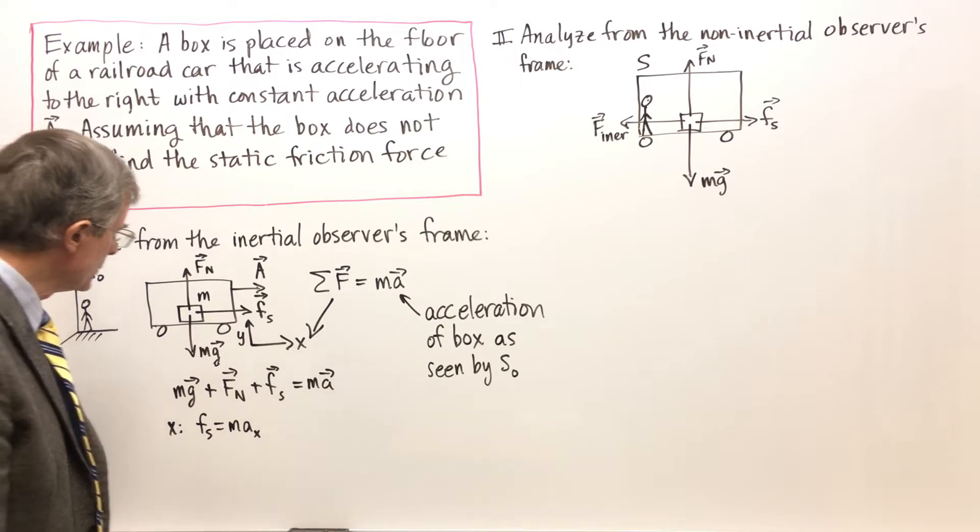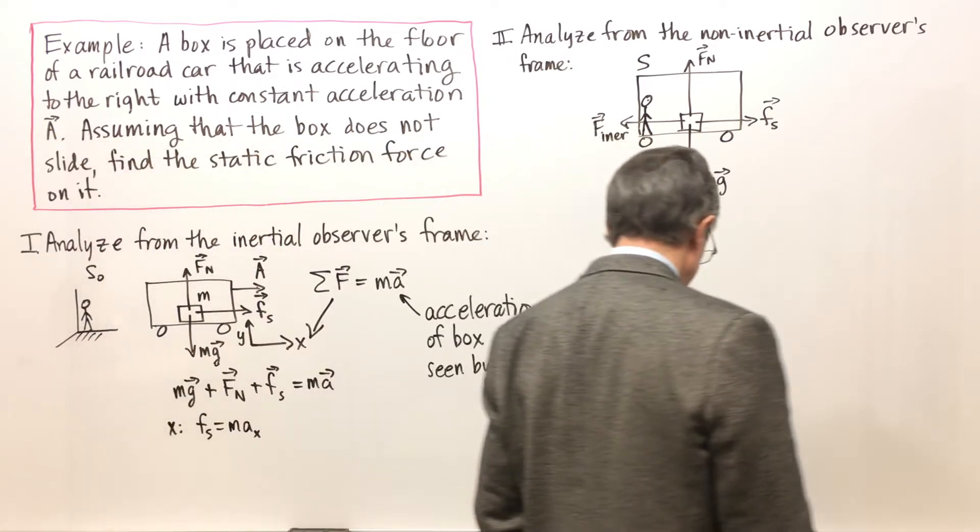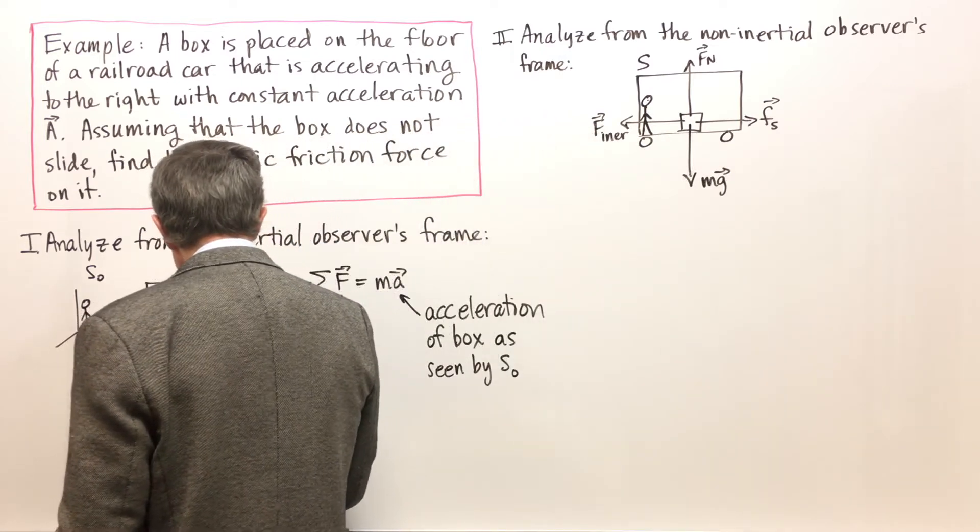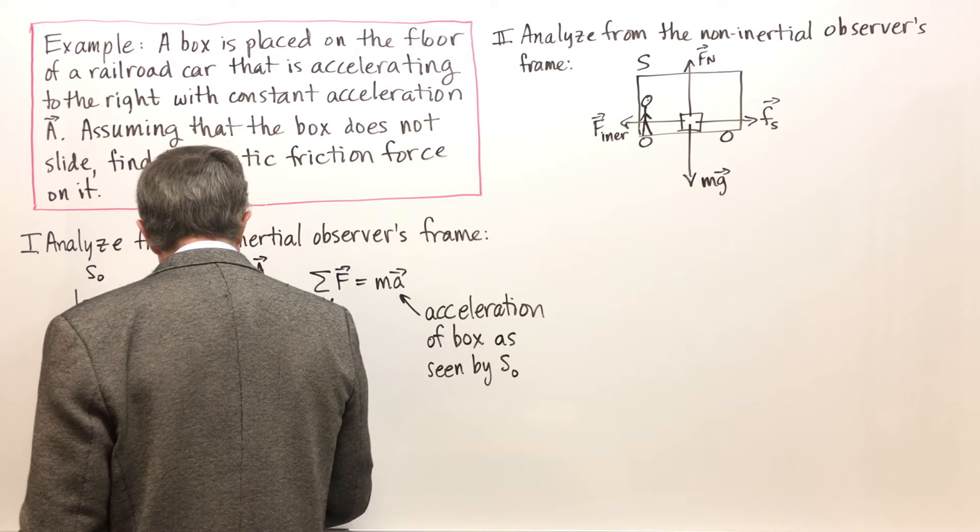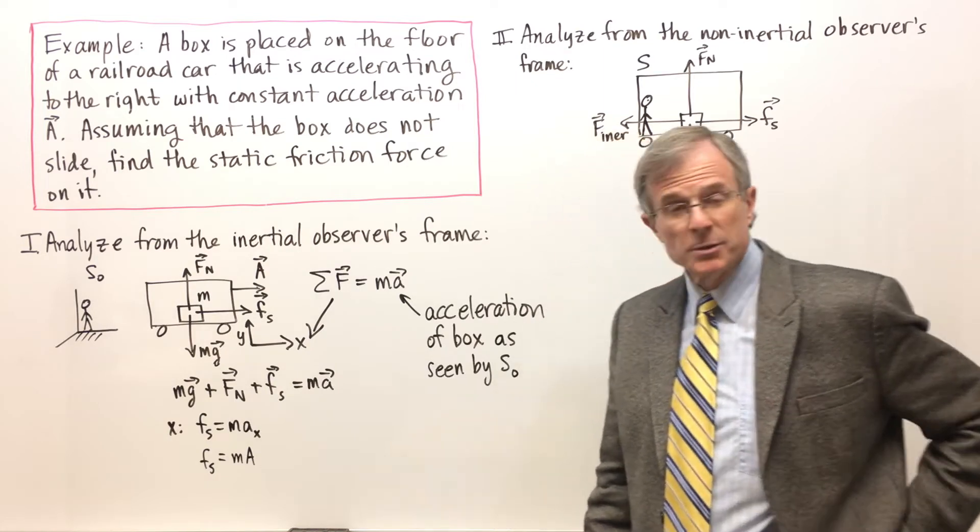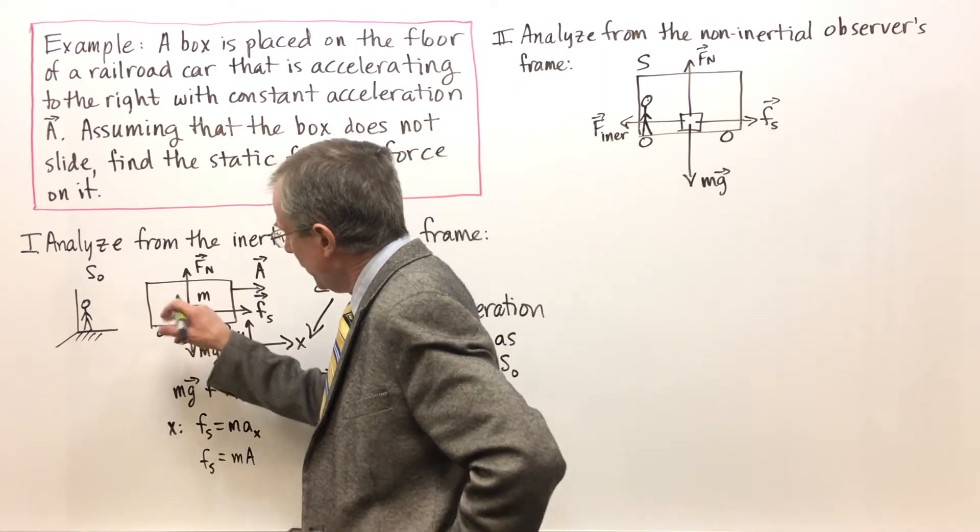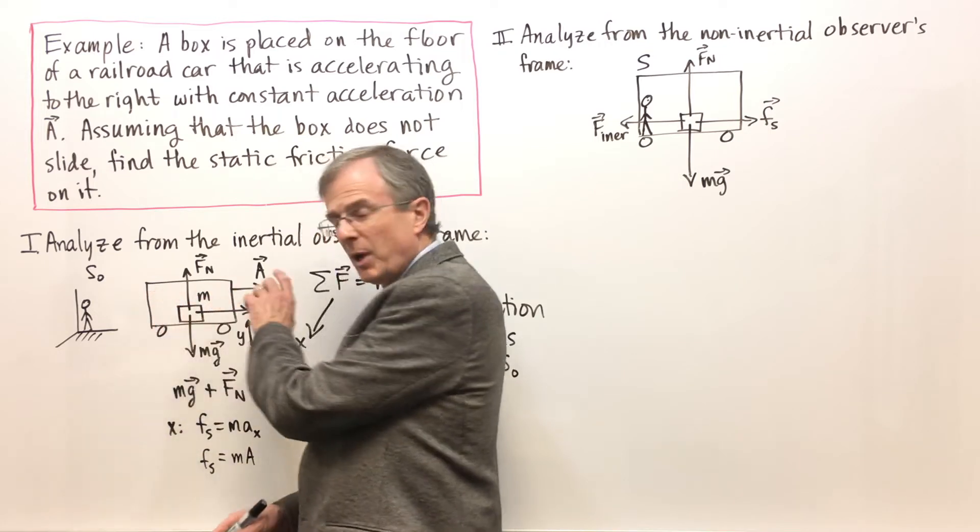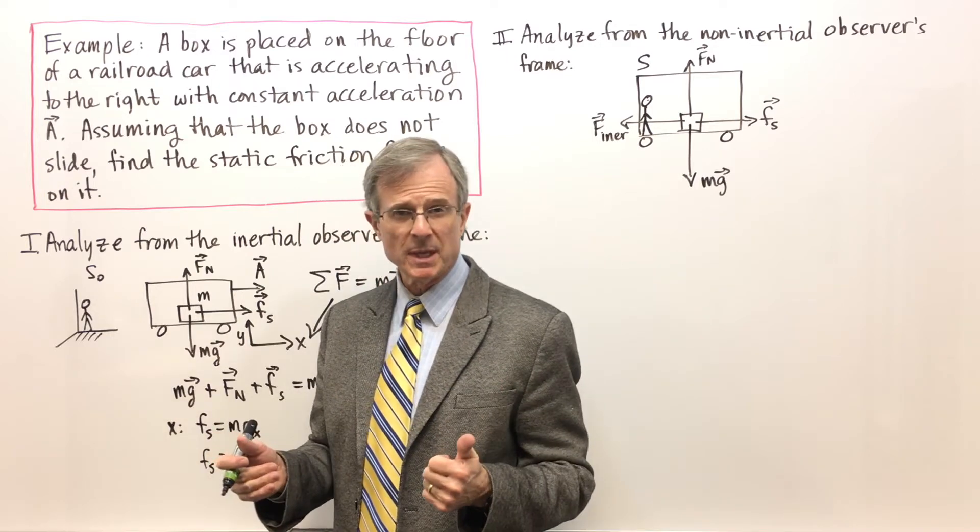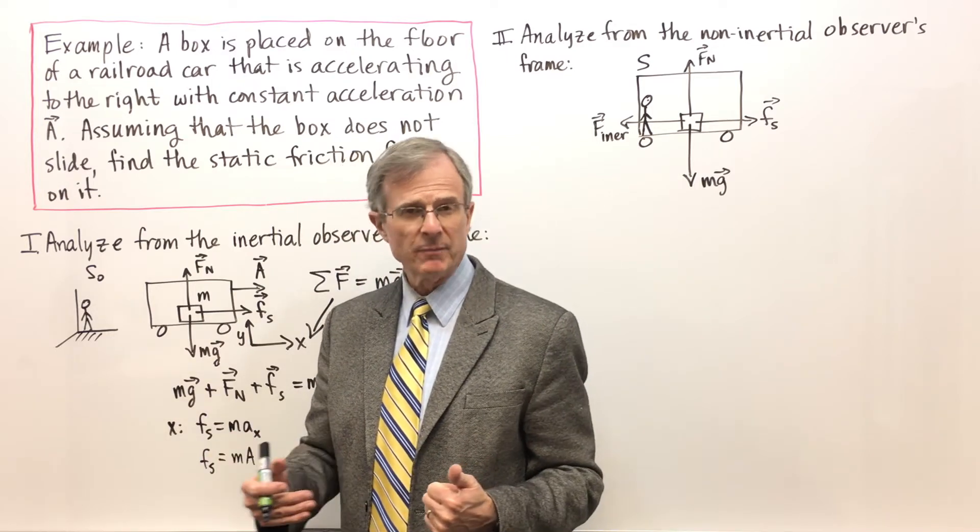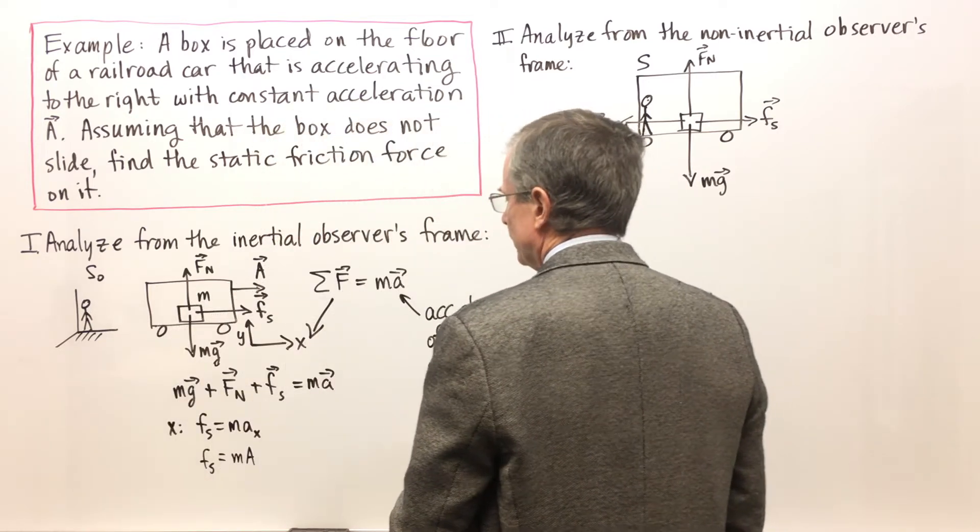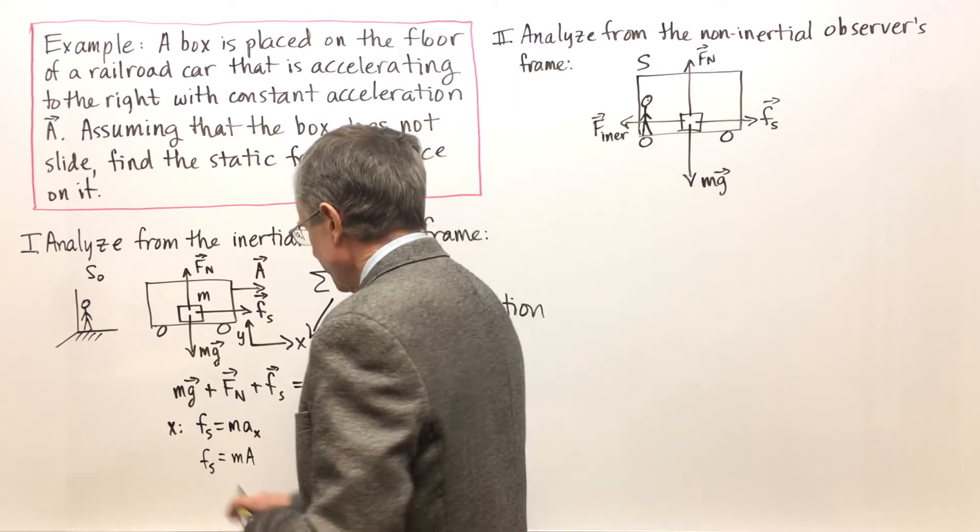And this acceleration in the x direction, if the box doesn't slide, then this acceleration in the x direction better be equal to the acceleration of the box car. In other words, the railway car and the box inside, if the box is not sliding, they'll both have the same acceleration because they're both having the same velocity and position. And so we end up finding the static friction force in this way.